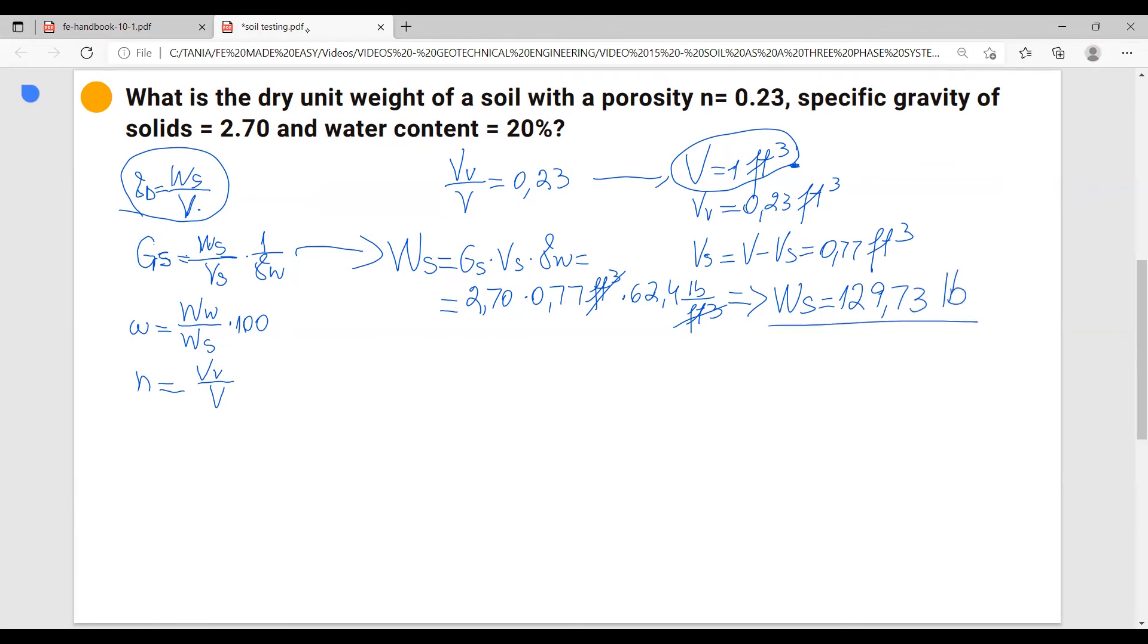Great, now let's go to our dry unit weight formula which is weight of solids, which is 129.73 pounds, over the entire volume which is one cubic foot. And that means the dry unit weight equals to 129.73 pounds over cubic feet, and this is the answer.